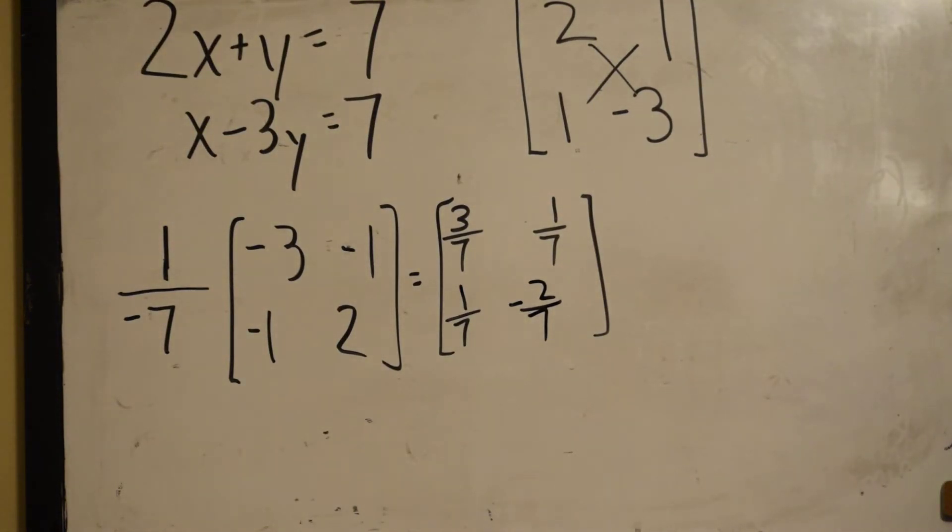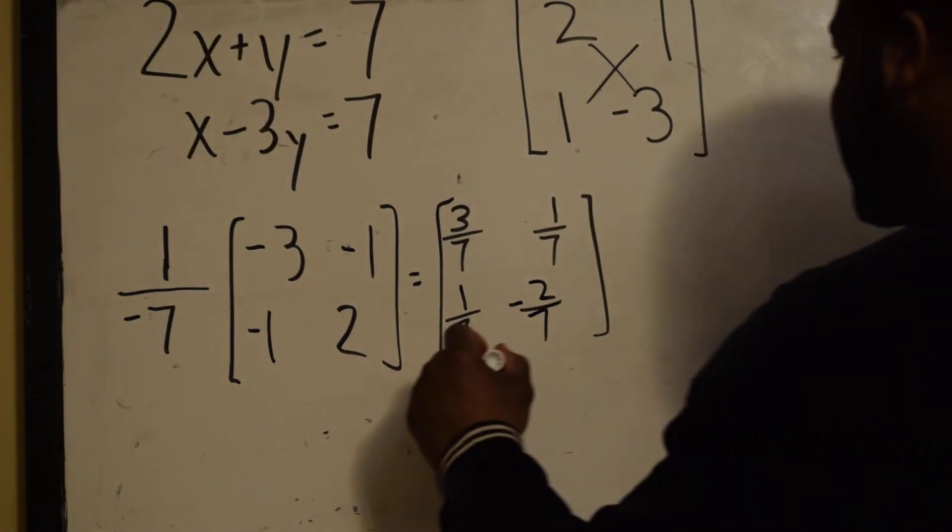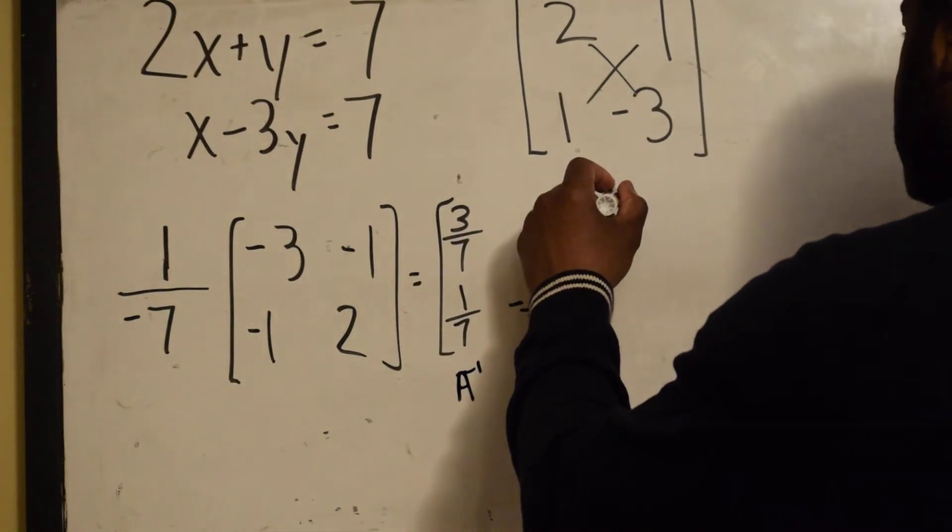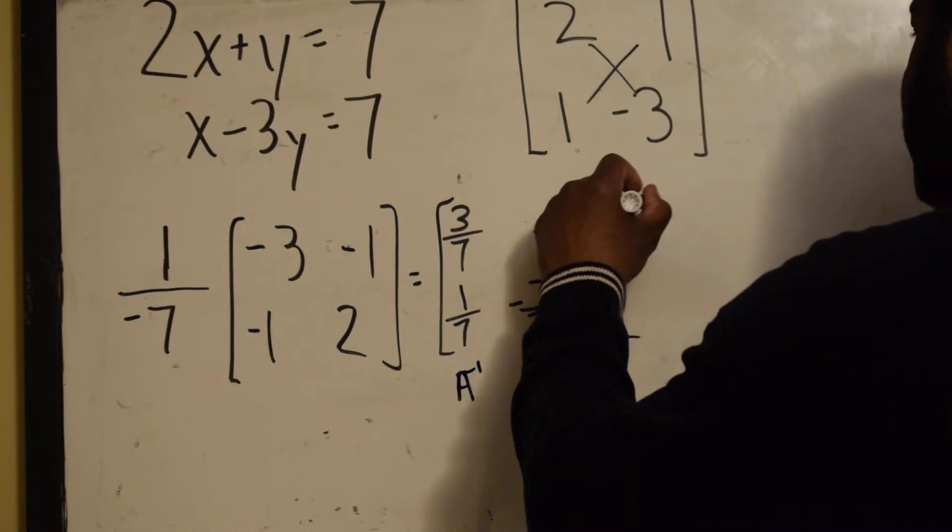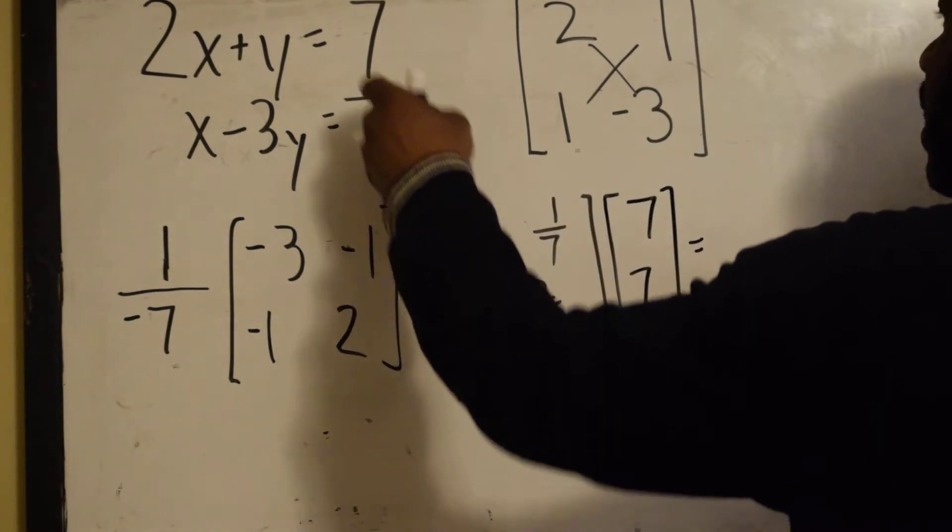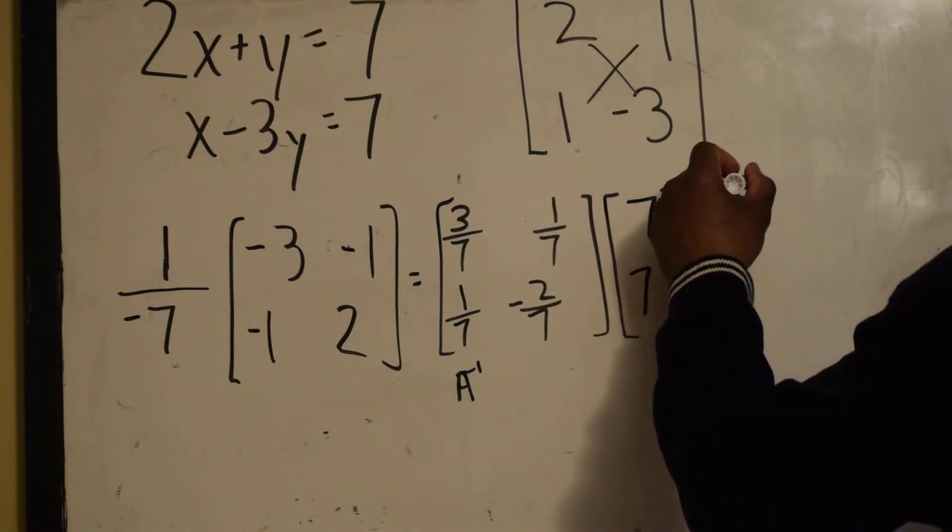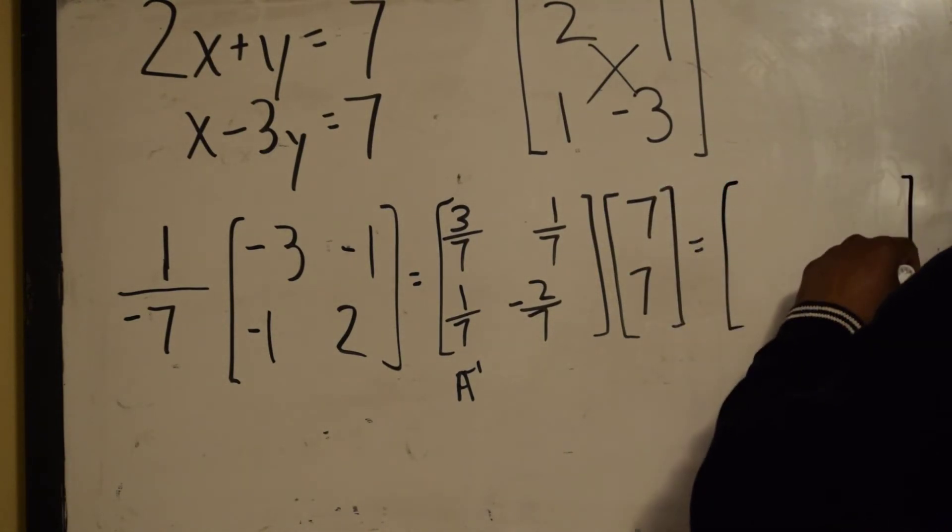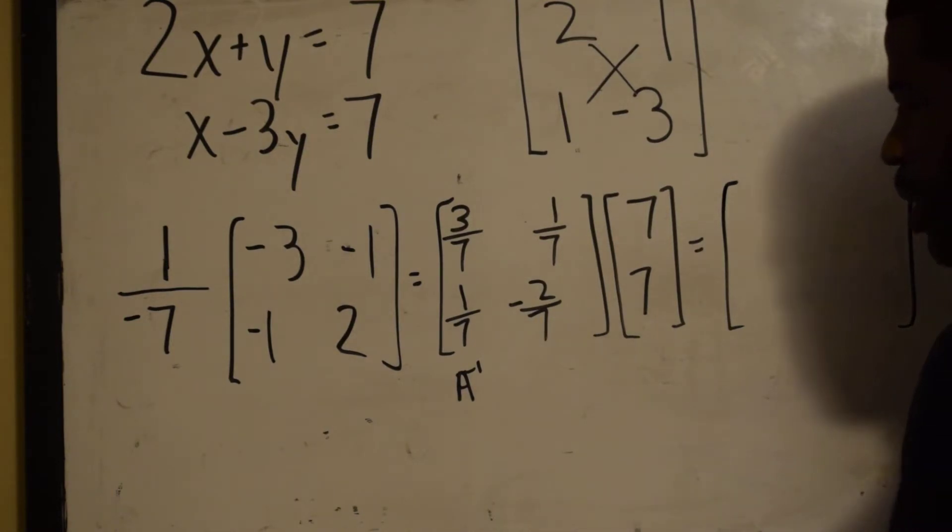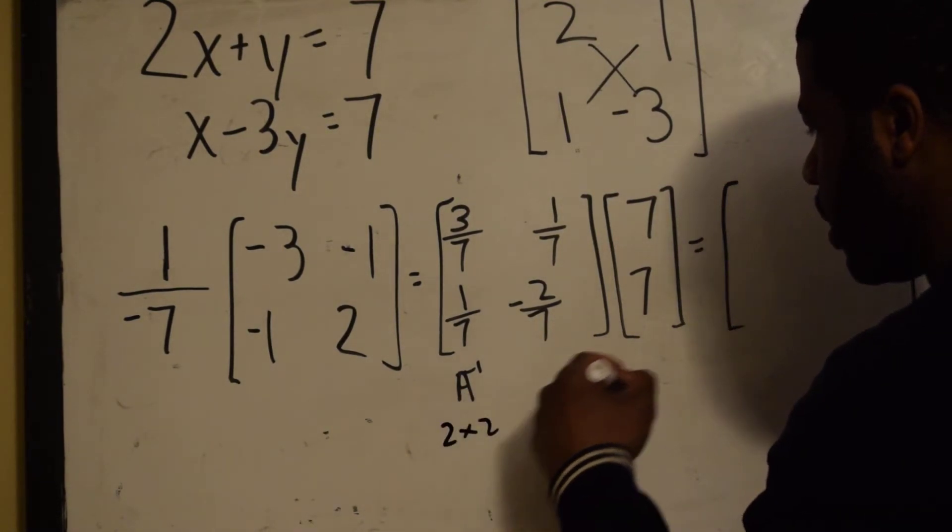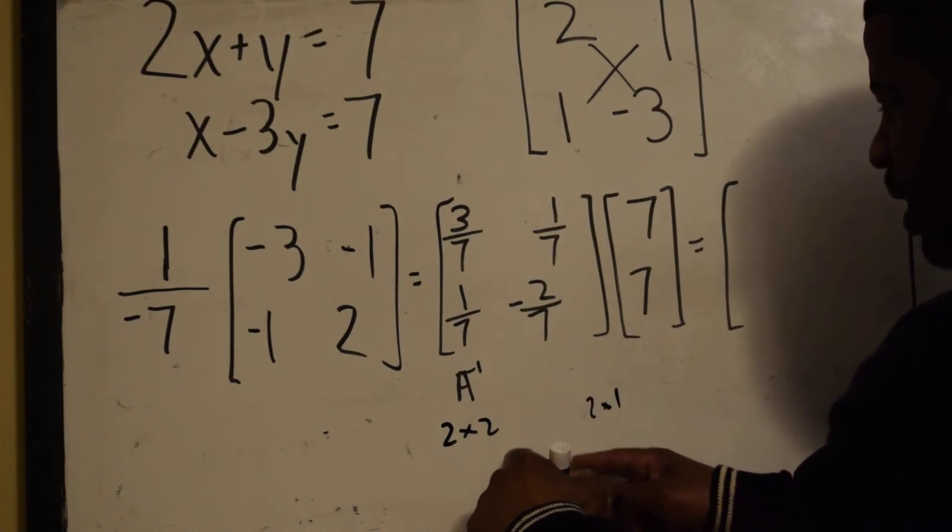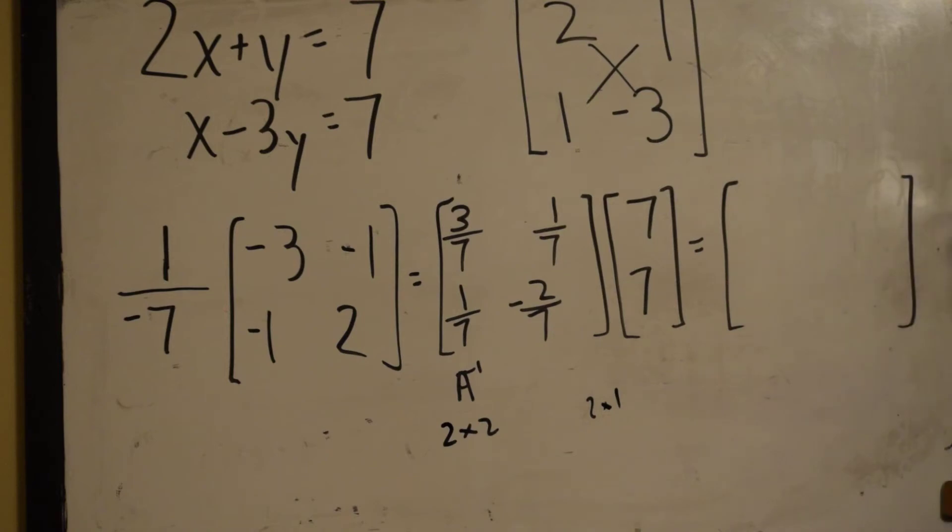Now, what do we need to do? So this is our inverse, and we multiply this by our solution vector. One thing we remember is a 2 by 2 multiplied by 2 by 1, we can do it, and the result is a 2 by 1 matrix.